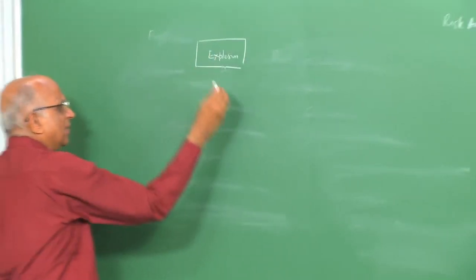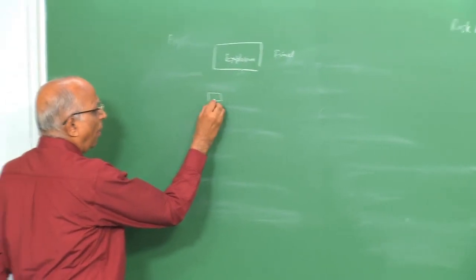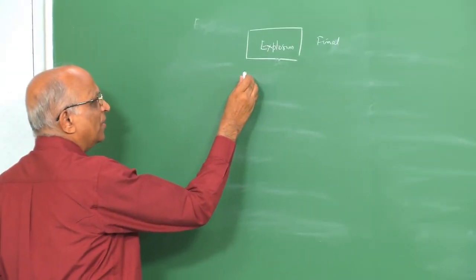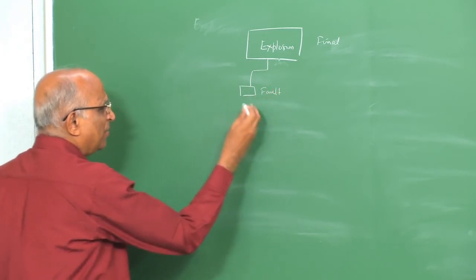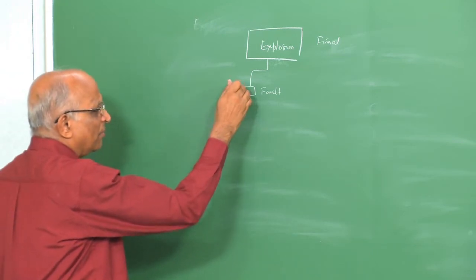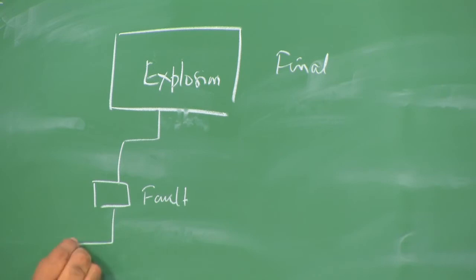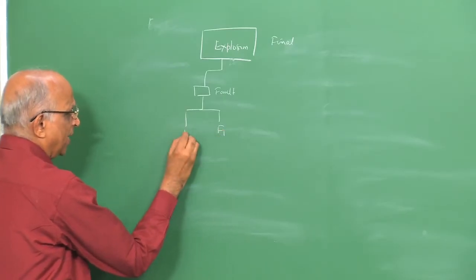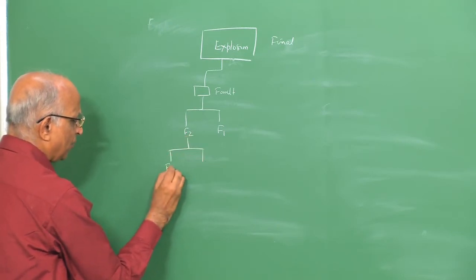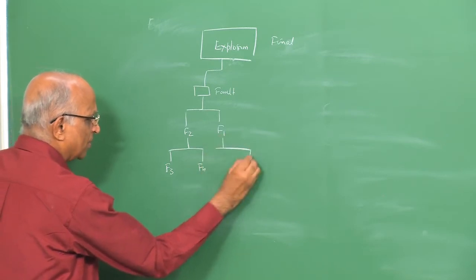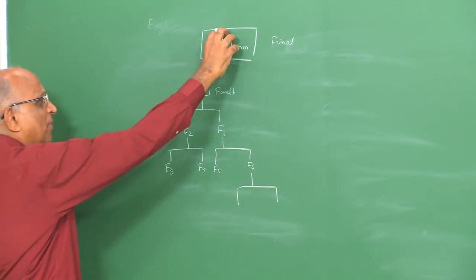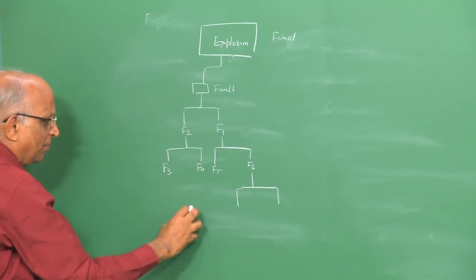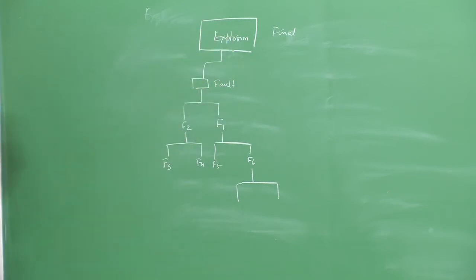Starting from the final event — let's say an explosion — we try to identify the faults or precursor events which ultimately lead to this explosion. For instance, this explosion could have arisen from some fault due to mismanagement, mishandling, or an ignition source coming in contact with fuel. That fault could have come from faults F1 and F2, which in turn come from F3 and F4, and so on. We start from the final event and keep working out what are the basic faults which could result in the explosion.